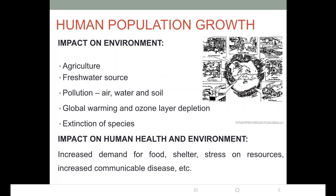Fresh water sources, which are less than 2.5 percent of all water on earth, are extremely important for the survival of plants, human beings, and animals. With increased population, agricultural runoffs from fields carry chemicals into water bodies, causing water pollution and eutrophication.